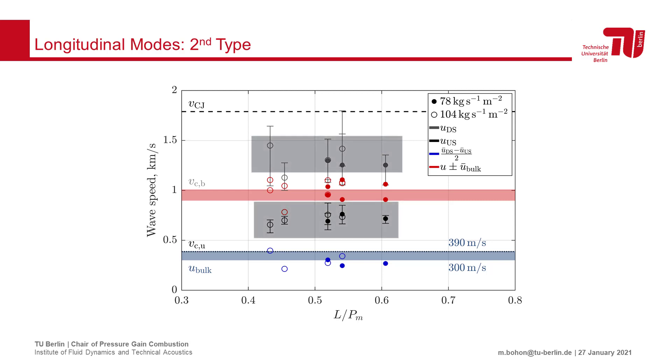When we adjust the measured up and downstream velocities by the estimated bulk velocity, on top of which these waves are propagating, which we will plot in the red markers, we see that these wave speeds are very close to the speed of sound in the products. This result further supports the idea that this mode is associated with the acoustics of the combustor.